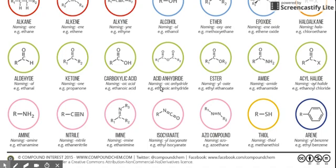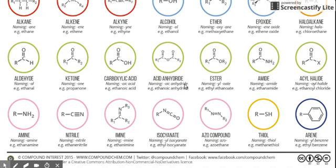Next is acid anhydride. Acid anhydride has two C double bond O groups with an O in the middle between the two carbons, and alkyl groups at the terminals. It's still acid, but it's anhydride because there's no more hydrogen on the O — unlike carboxylic acid, which still has O then H. The name still ends in O-I-C, but instead of the word acid, you use the word anhydride. So O-I-C anhydride represents acid anhydride. Example: ethanoic anhydride.